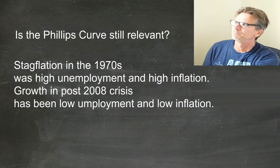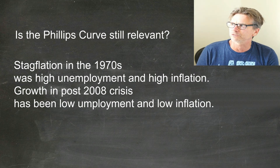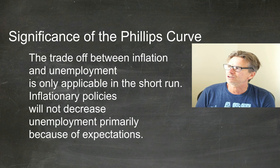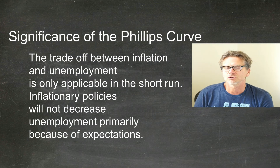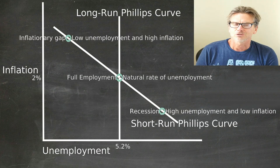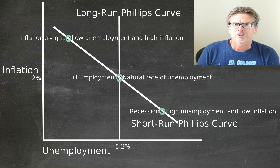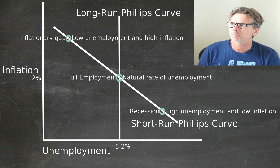What is relevant for the Phillips curve is this: the significance is the trade-off between inflation and unemployment, and it's only applicable in the short run. Inflationary policies will not decrease unemployment primarily because of expectations. Short-term policies are very short-term or may not even be effective, depending on your point of view. The graph has a vertical line for the long run and a downward-sloping curve for the short run, with inflation on the y-axis and unemployment on the horizontal x-axis. Thank you very much.